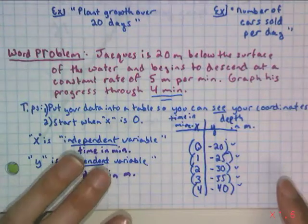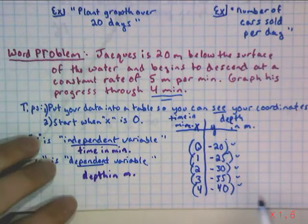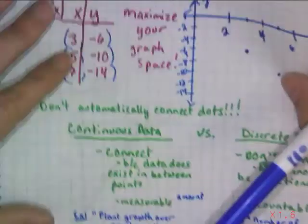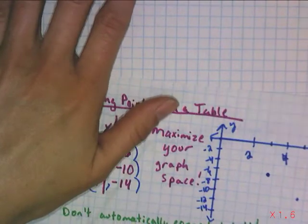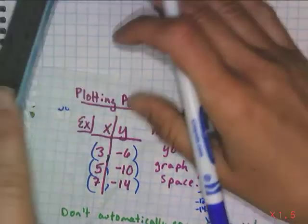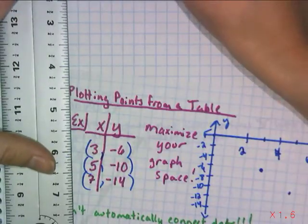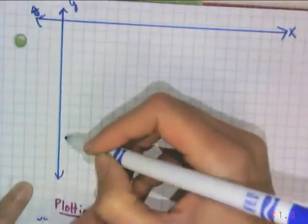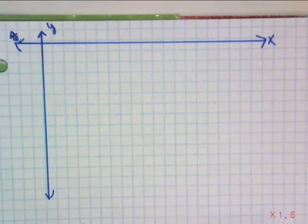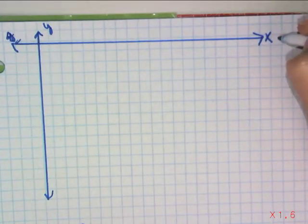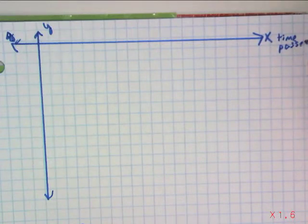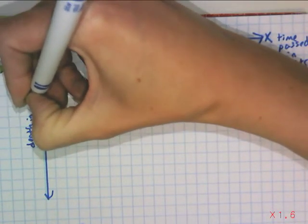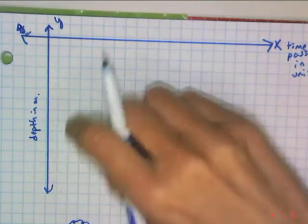So we are going to plot these points. We think about which quadrant we're going to maximize. We notice it's a positive and a negative. We go to the right, we go down. It's quadrant 4. So when we set this up, we're going to think about creating a big quadrant 4. We're going to put our x-axis on the top and our y-axis off to the left. Instead of just labeling them y and x, we're going to put units on them. So x represents the time passed in minutes. And y represents the depth in meters.